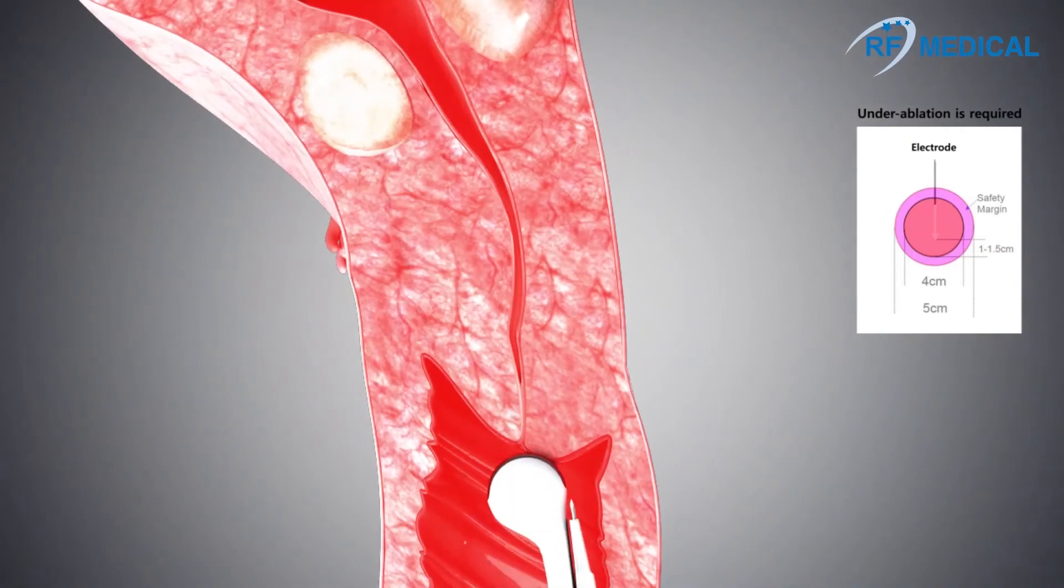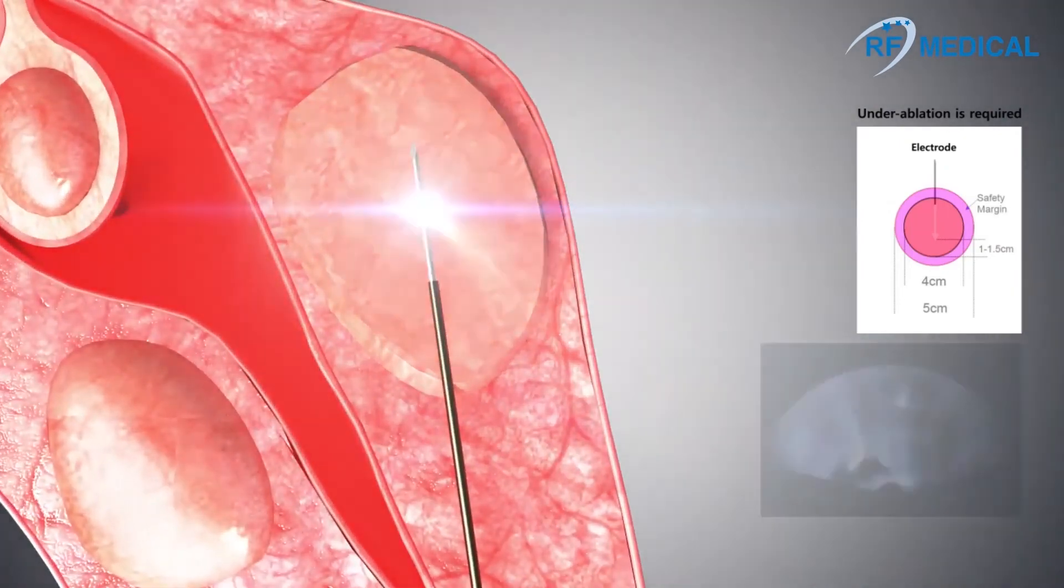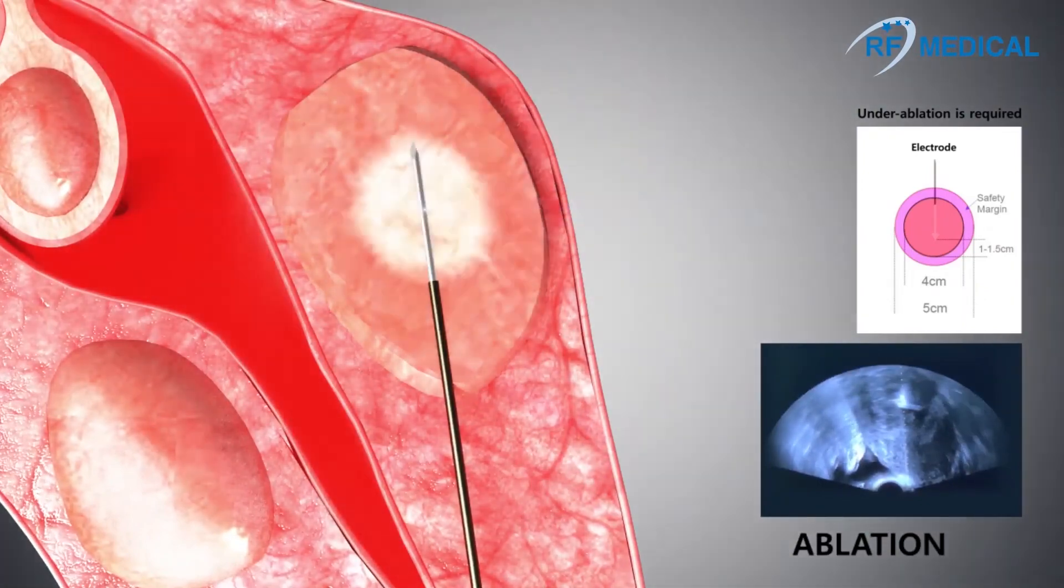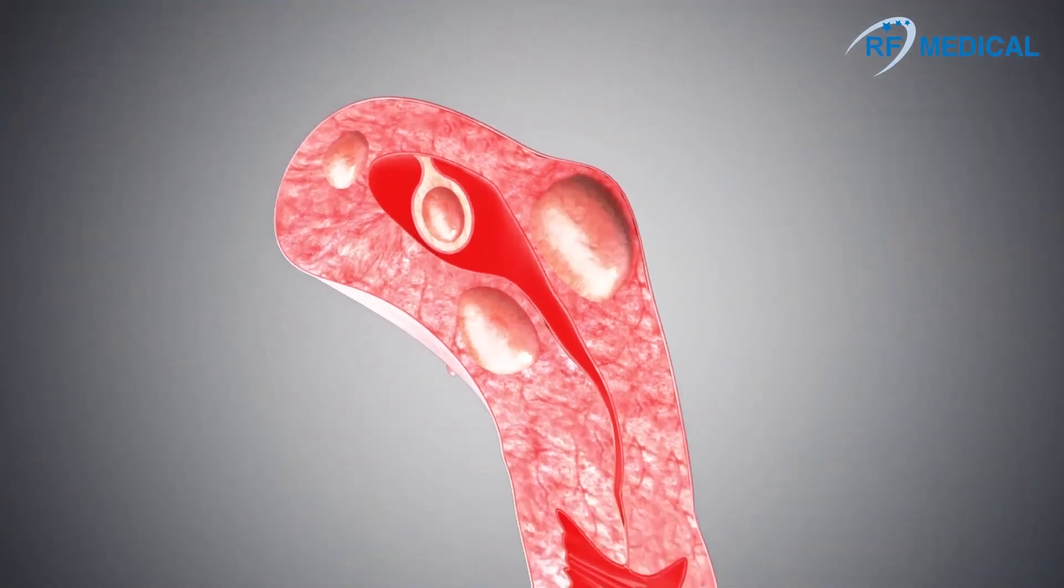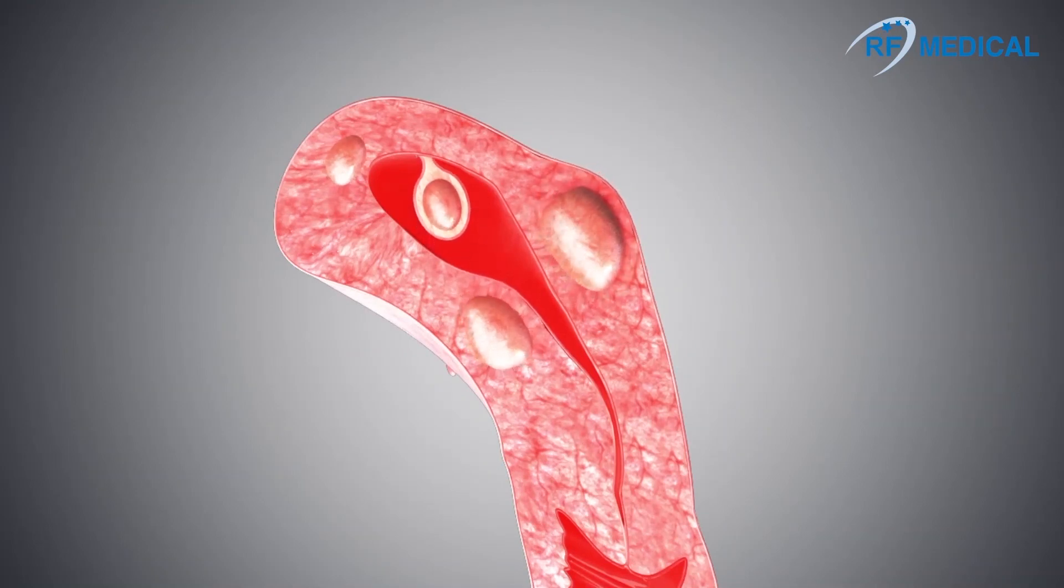Depending on the size of myoma, the length of active tip and ablation time may differ. Extra caution must be taken in order to avoid heat transmission to nearby organs. This is achieved by under-ablation of the myoma. The size of ablated myomas will gradually decrease over time.